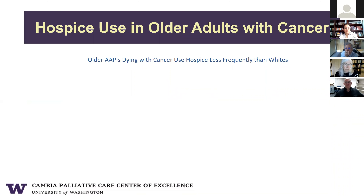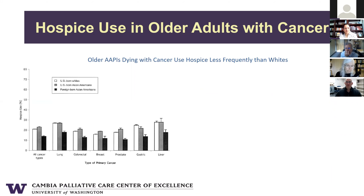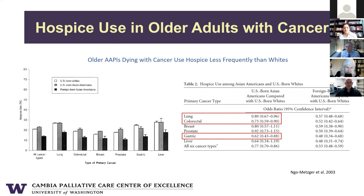Looking at rates of hospice use in the setting of cancer, we see that foreign-born Asian Americans are much less likely to use hospice across all cancer types. Additionally, for lung, colorectal, and gastric cancer, even U.S.-born Asian Americans are less likely to enroll in hospice.